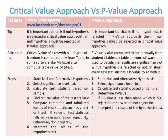An important tip: if the null hypothesis is rejected in the critical value approach, then the null hypothesis must also be rejected in the p-value approach. Conversely, if the null hypothesis is rejected in the p-value approach, then it must also be rejected in the critical value approach. Both approaches always lead to the same decision.